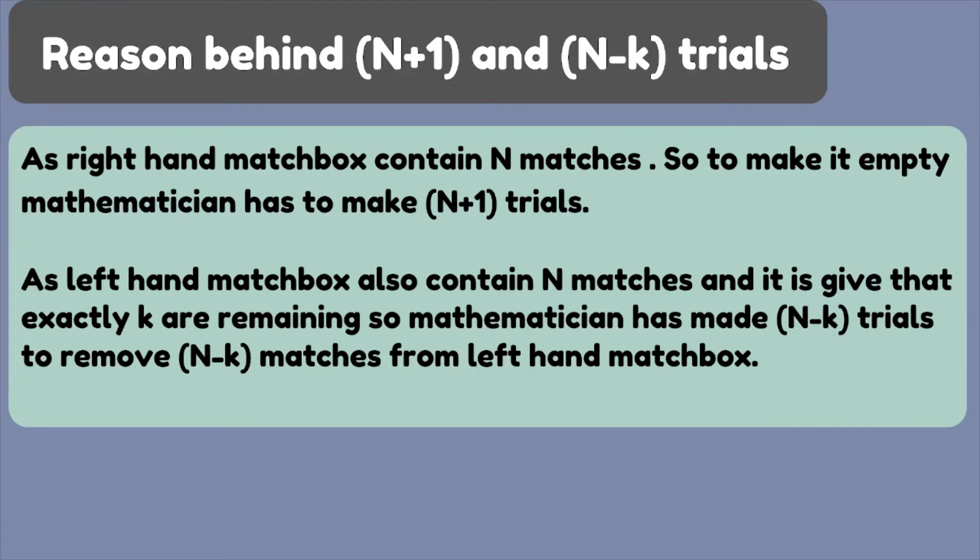Also in left hand matchbox also contain N matches and it is given that exactly k are remaining. So mathematician has to make N minus k trials to remove N minus k matches from left hand matchbox so that there can only remain exactly k matchbox.